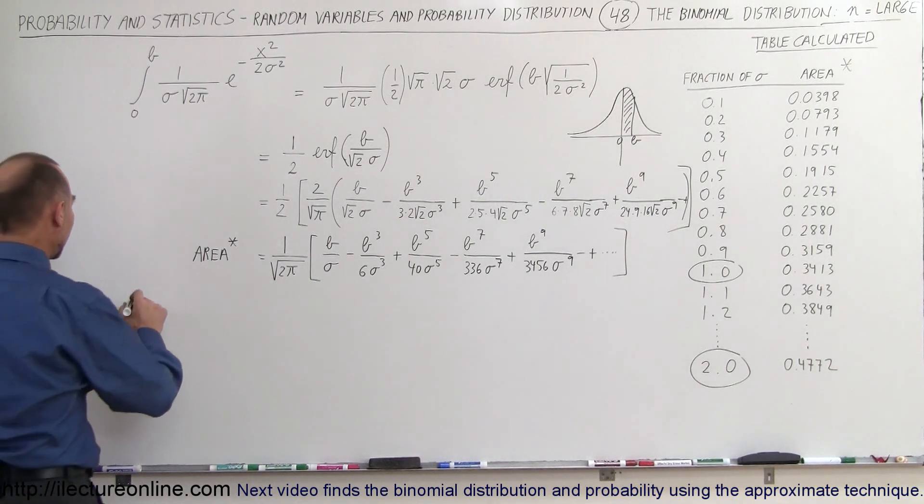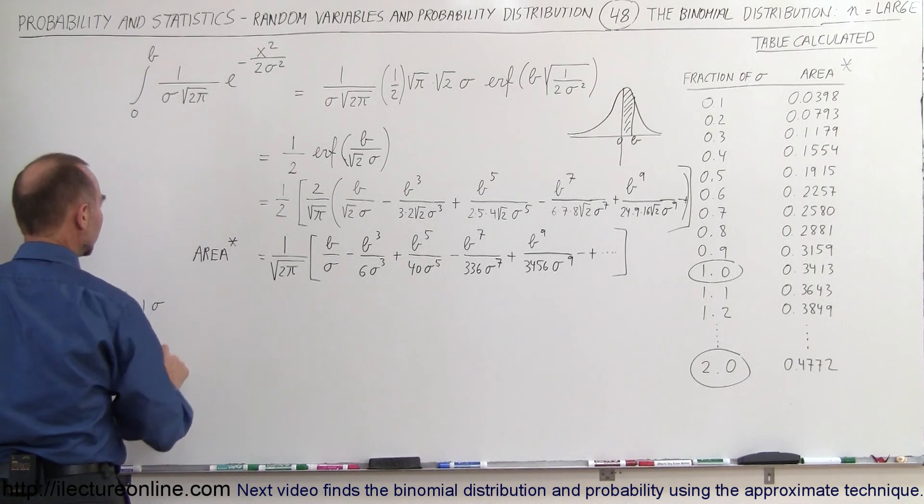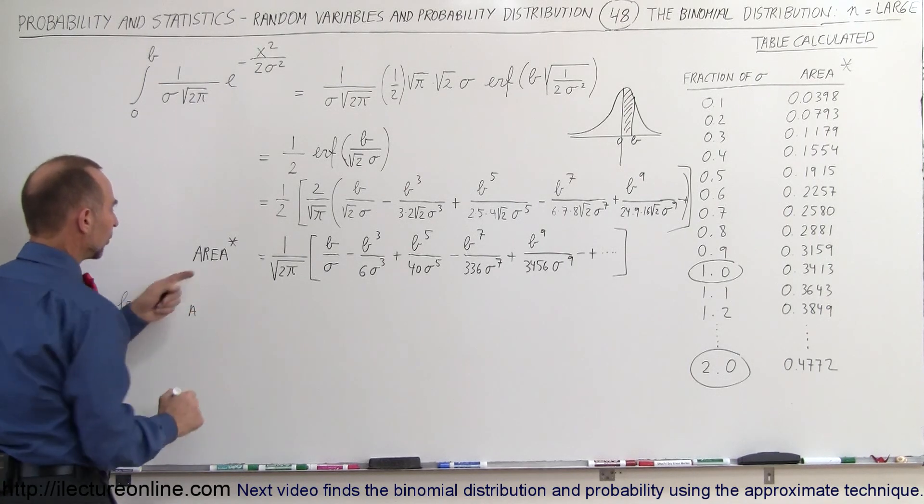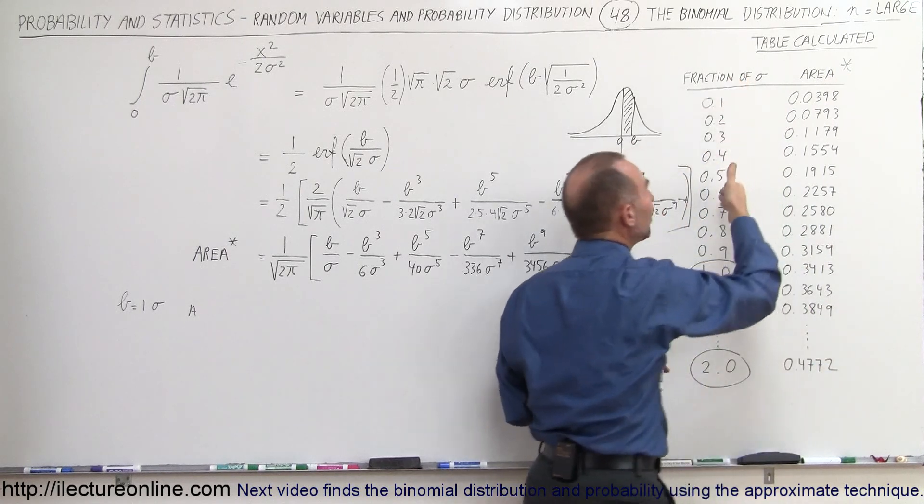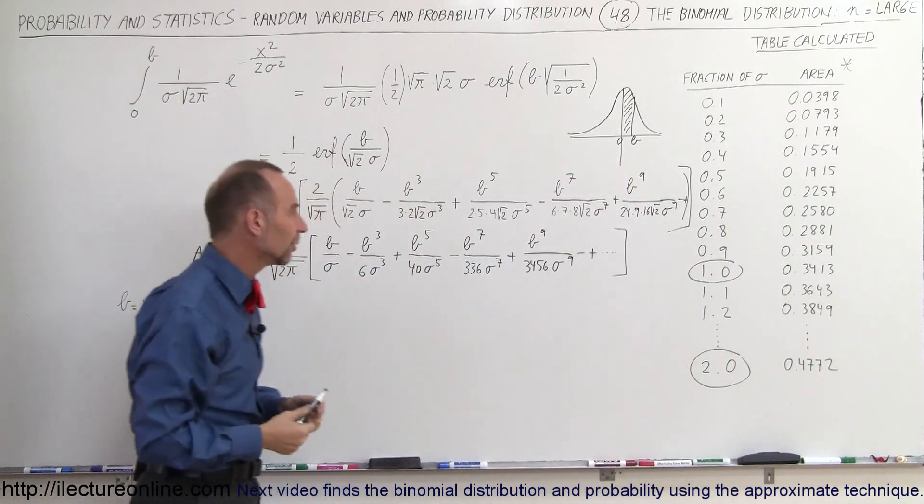So, in the case where B is equal to one sigma, the area—and of course the area we're going to calculate right here—is the area in our table that corresponds to the z value or the fraction of sigma as we say it.